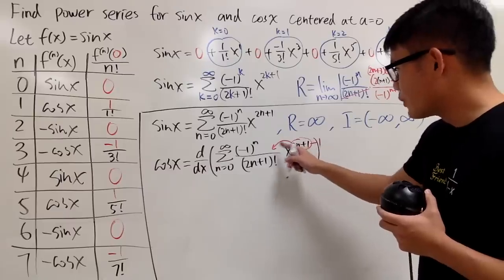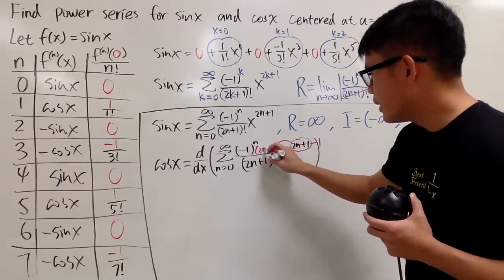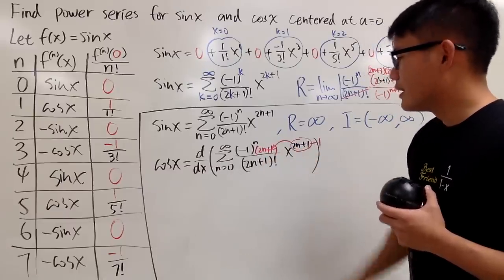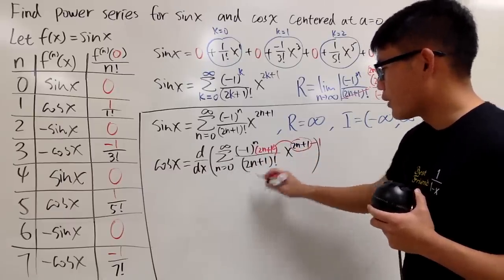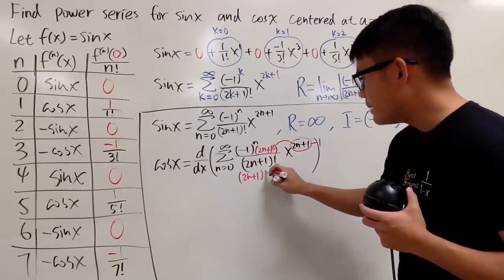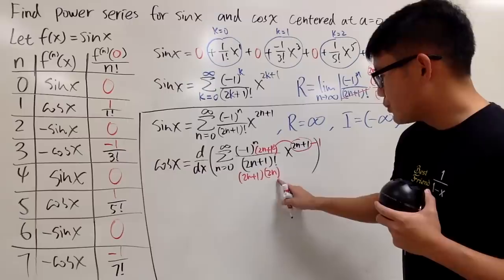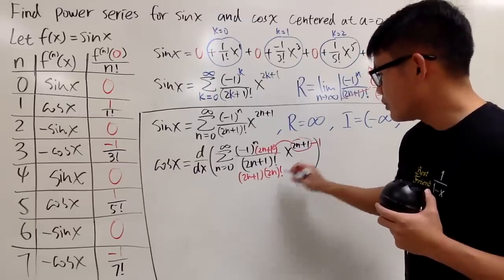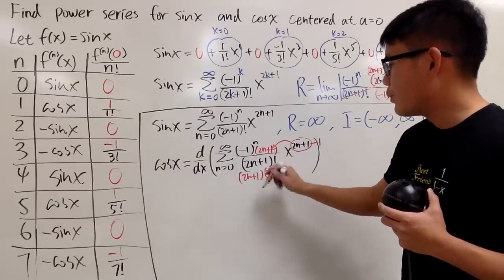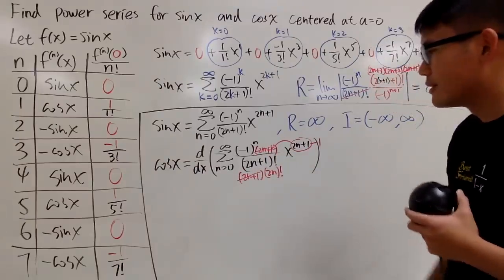And you see, when you put the power to the front, you have this 2n plus 1 right here. This right here, you have 2n plus 1 factorial. You can look at this as 2n plus 1 times 2n in parentheses. 2n right here in parentheses, and then you do the factorial. This and that will cancel.